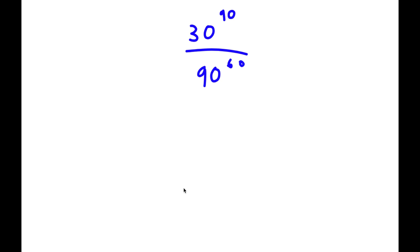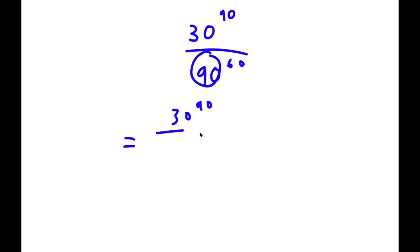So in this problem, I have 30 to the power of 90 over 90 to the power of 60. To solve this, I'm going to first rewrite 90 as 3 times 30. So now I have 30 to the power of 90 over 3 times 30 to the power of 60.